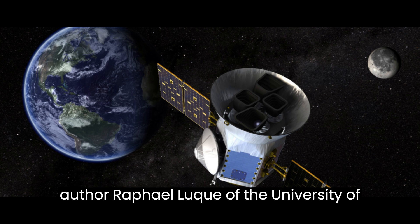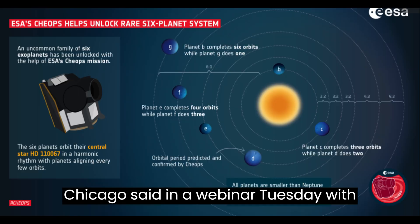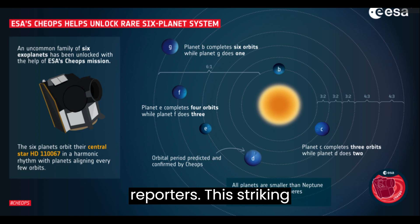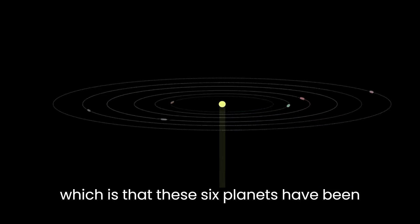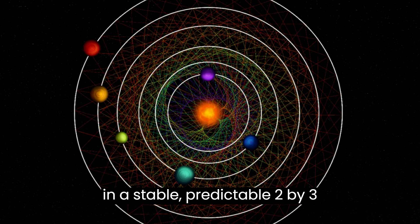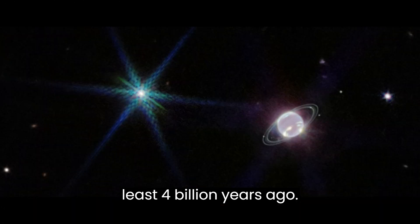Lead author Raphael Luque of the University of Chicago said in a webinar Tuesday with reporters, this striking reminder that mathematics governs the universe comes with another implication, which is that these six planets have been in a stable, predictable two-by-three orbital pattern since they were formed at least four billion years ago.